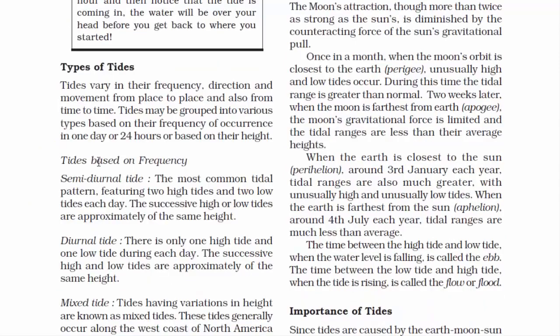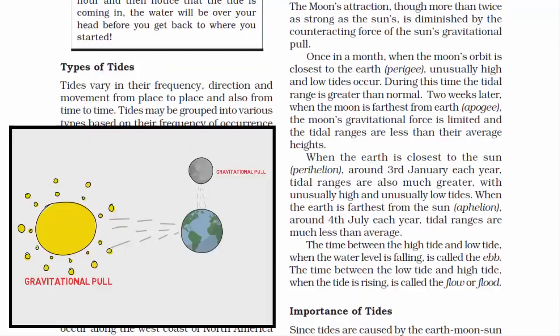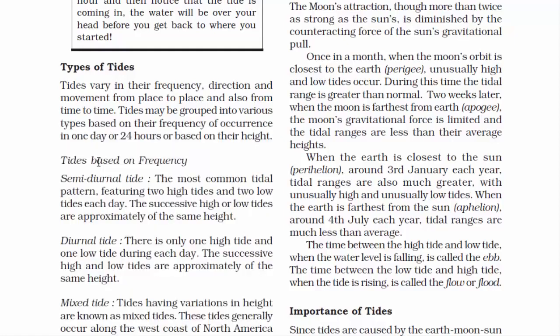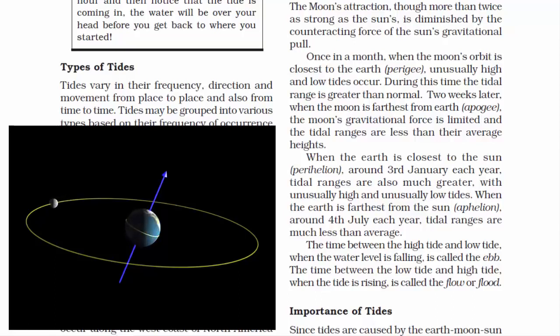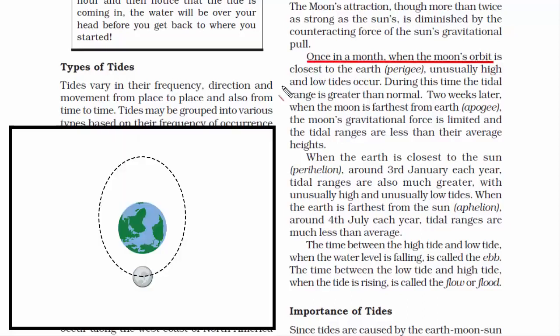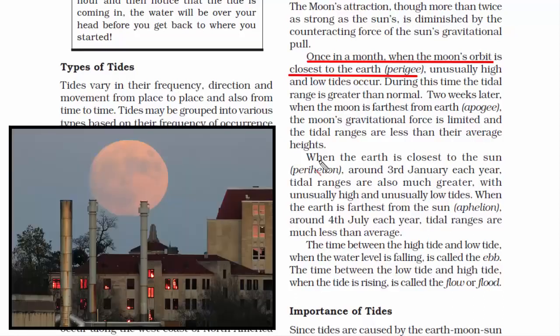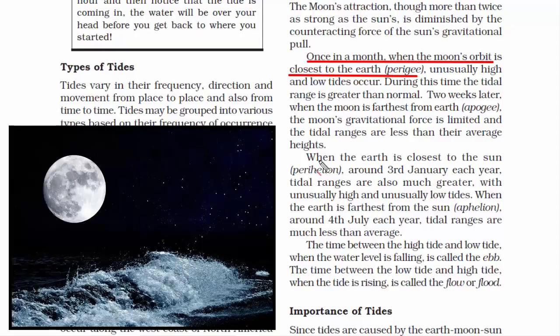Throughout this chapter, we've seen that the gravitational pull of both the moon and the sun creates massive tides on earth. It takes about 28 days for the moon to complete one orbit around the earth, and once a month the moon's orbit is closest to the earth — this is called perigee, also known as the supermoon. When the moon is closest to the earth, there are unusually high tides in the ocean, and the tidal range is greater than normal because fluids are loose and attracted by the moon's gravitational pull.